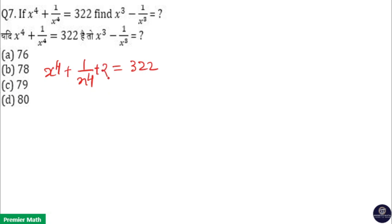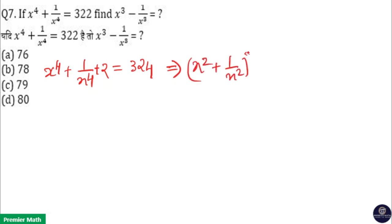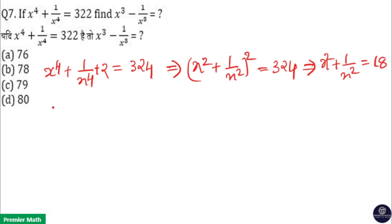If I add 2 here, 322 becomes 324. So this will become x squared plus 1 by x squared, the whole square, is 324. That means x squared plus 1 by x squared is 18.